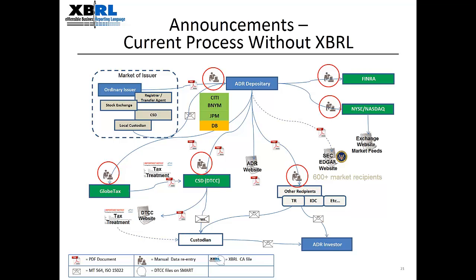The announcement is distributed to the marketplace and the Securities Clearinghouse. Citi enters the dividend terms on the New York Stock Exchange's E-Gov site and, for OTC programs, the FINRA site. Upon receipt of the paper announcements, DTC, EuroClear, Clearstream, and other end users must re-key the dividend terms, which adds cost, time, and risk to the process.